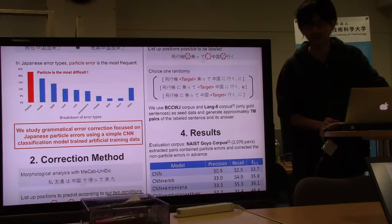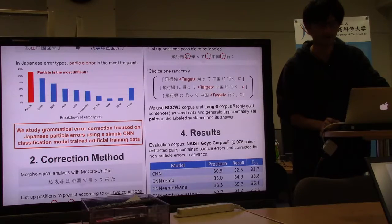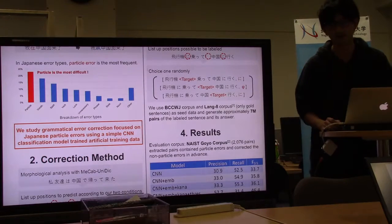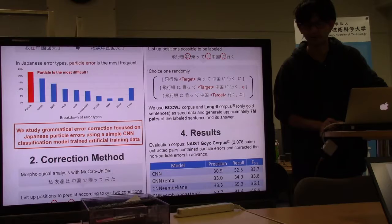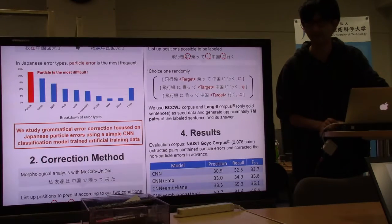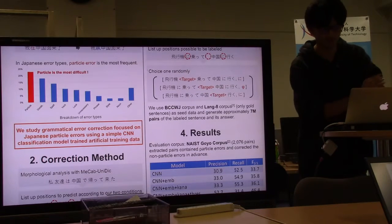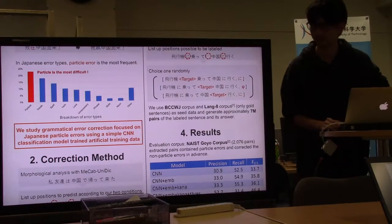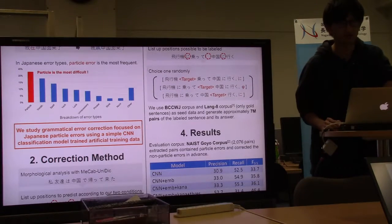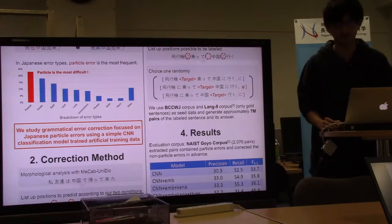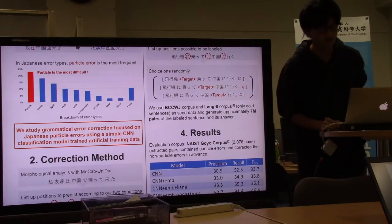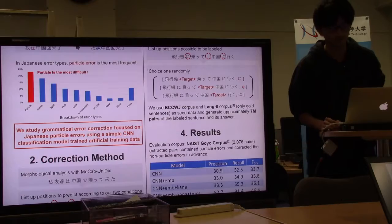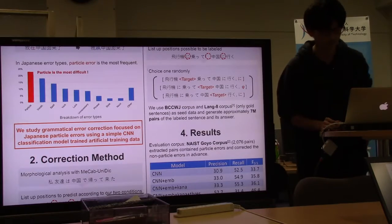To collect particle errors with high performance contributes to correcting all of the error types. Therefore, we study grammatical error correction focused on Japanese particle errors using a simple CNN classification model trained on artificial training data.